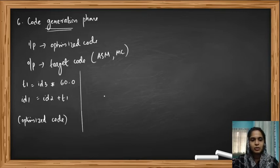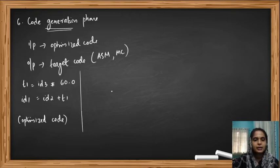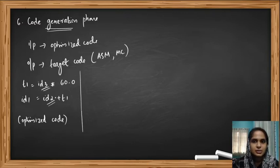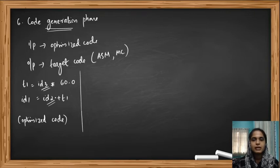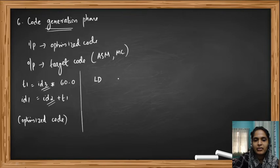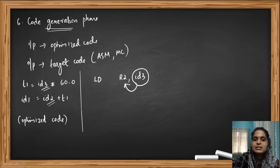Assembly code requires registers to load the values of the identifiers. We can see ID3 is used, so the value of ID3 must first be loaded into some register. Similarly, the value of ID2 must be loaded into a register. In assembly language we perform operations between registers only, and finally the result is stored back to the respective identifier. The first task is to load the value of ID3 into a register, say R2. We use the instruction LDF — F indicating we are dealing with floating values — to load ID3 into register R2.